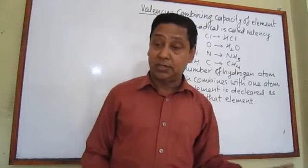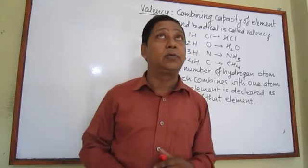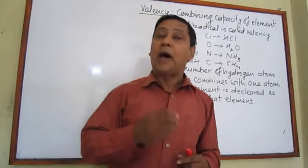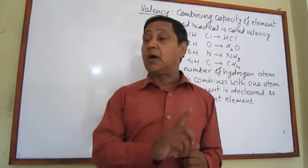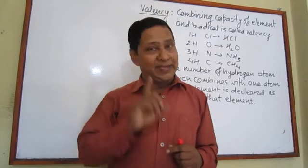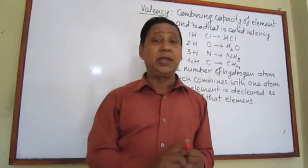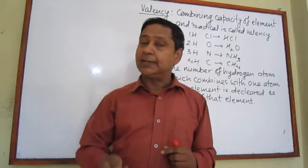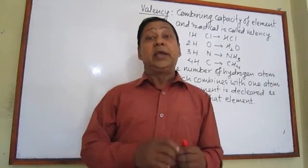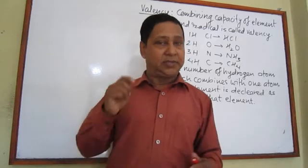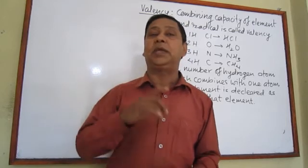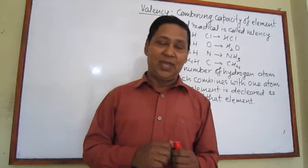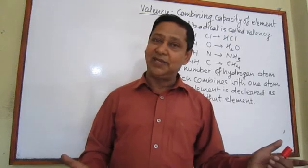To conclude, the valency of an element is the number of hydrogen atoms which combine with one atom of that element. For a radical, it is how many hydrogen atoms combine with that radical. If hydrogen doesn't combine, we can declare the valency of that element or radical by combining it with chlorine. This is how we declare the valency of elements and radicals.